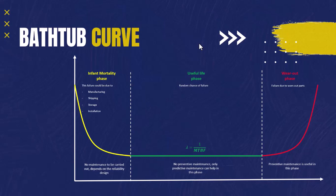Finally, the wear out phase is where preventive maintenance is most effective because it helps in replacing the worn out parts and reducing the hazard of failure. Sometimes we also add a fourth phase to this curve, which is the pre-life curve — the design stage — because this is where the reliability is actually determined.